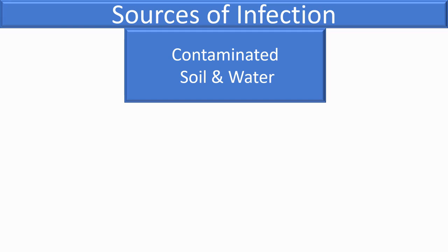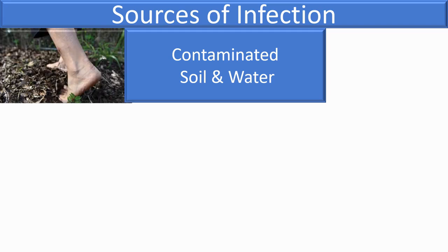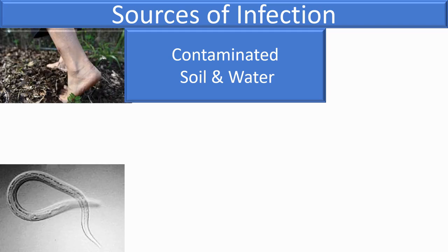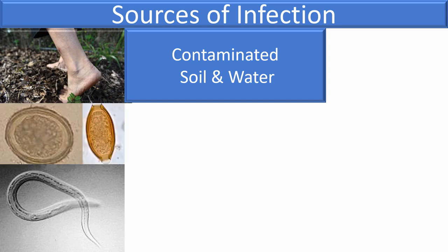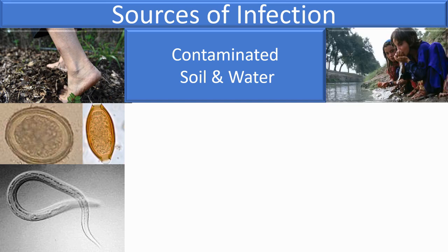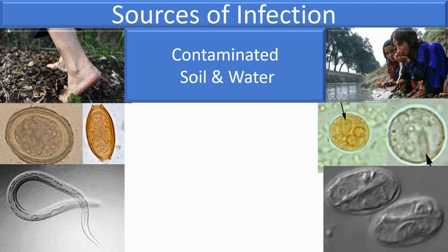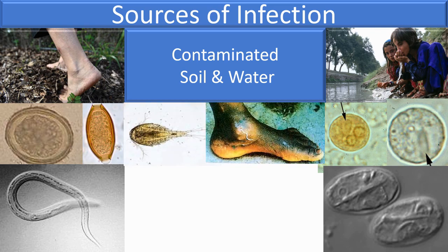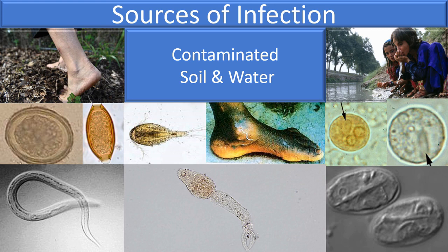Various sources of infection include contaminated soil and water. Walking barefoot in soil can expose a person to hookworm larvae that penetrate directly through the skin. Soil polluted with embryonated eggs of roundworm or whipworm may be accidentally ingested. Infective forms such as amoebic cysts and Giardia present in water may be ingested. Water containing intermediate hosts may be swallowed — for example, cyclops containing guinea worm larvae. Infected larvae in water may also penetrate exposed skin, as with cercariae of schistosomes.